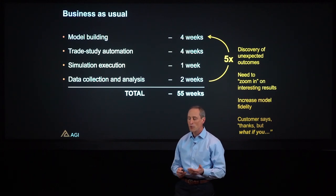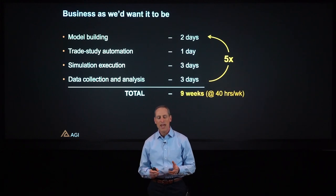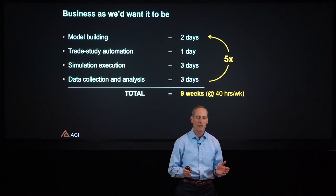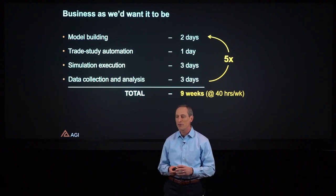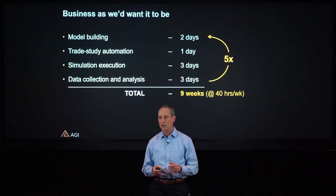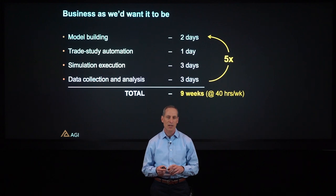So what does that mean we have to do with this fundamental process? We have to take time spans that we're used to thinking of in terms of weeks or months and reduce those down to days. These are the kind of timelines we're trying to achieve. We're going to talk about some of the methods that we've learned in the context of space system architecture design to make this happen.